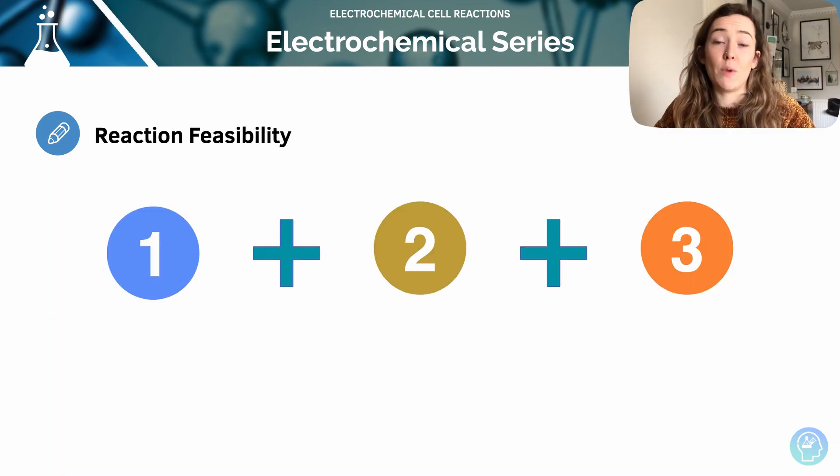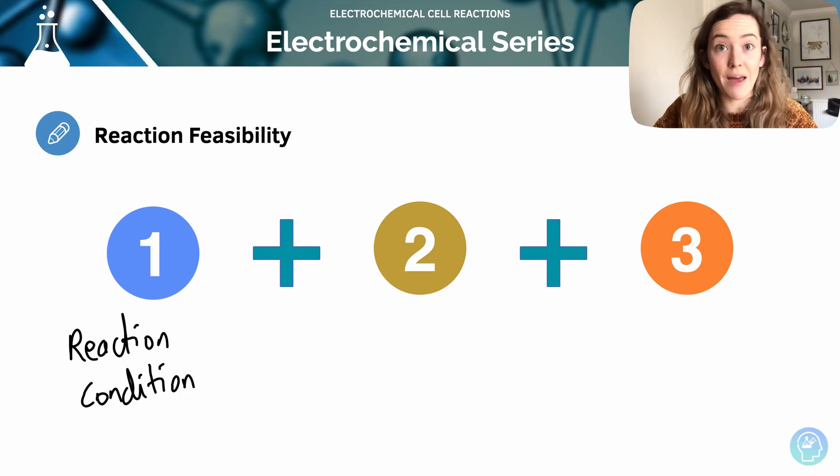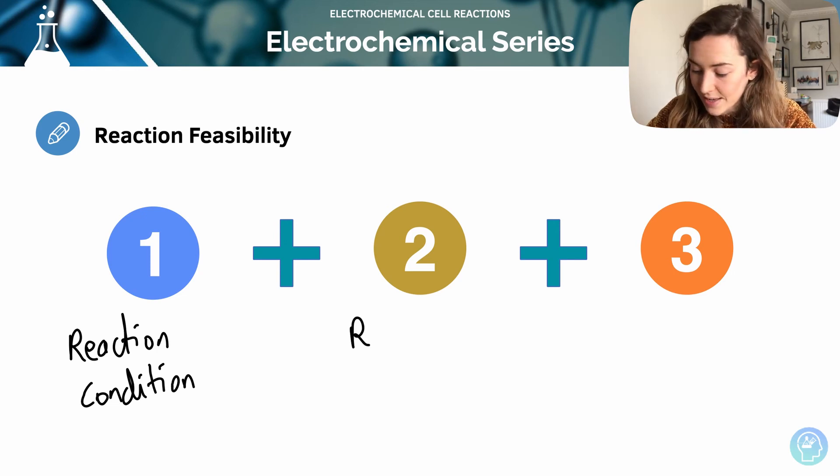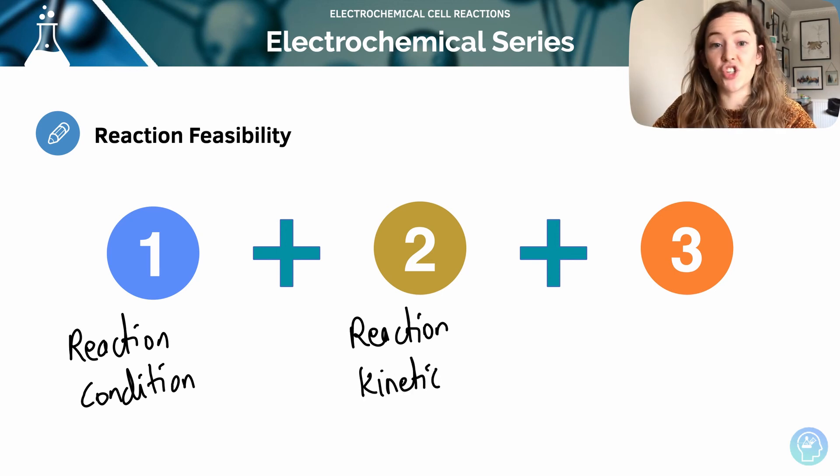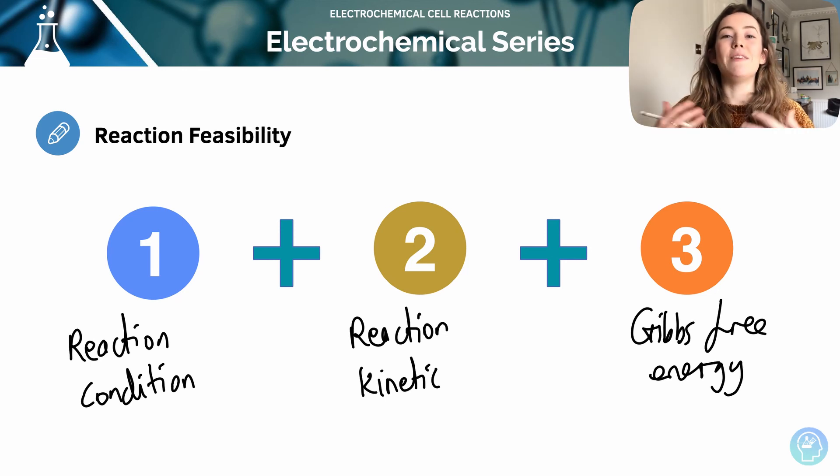So reaction feasibility. We've learned that if we get a positive EMF value, that means that it's going to be feasible. But there are other things, other limitations that dictate whether that reaction can actually happen. We've got the reaction conditions, of course, so they need to be standard if we are to use the EMF to work out whether it's feasible. Reaction kinetics. Activation energy. If the activation energy is too high, then the reaction is not going to happen either way, regardless of whether we've got a positive value for EMF. And finally, Gibbs free energy. For example, a reaction may be feasible in terms of the EMF, but it might have a really high activation energy and therefore it won't proceed at a given temperature.